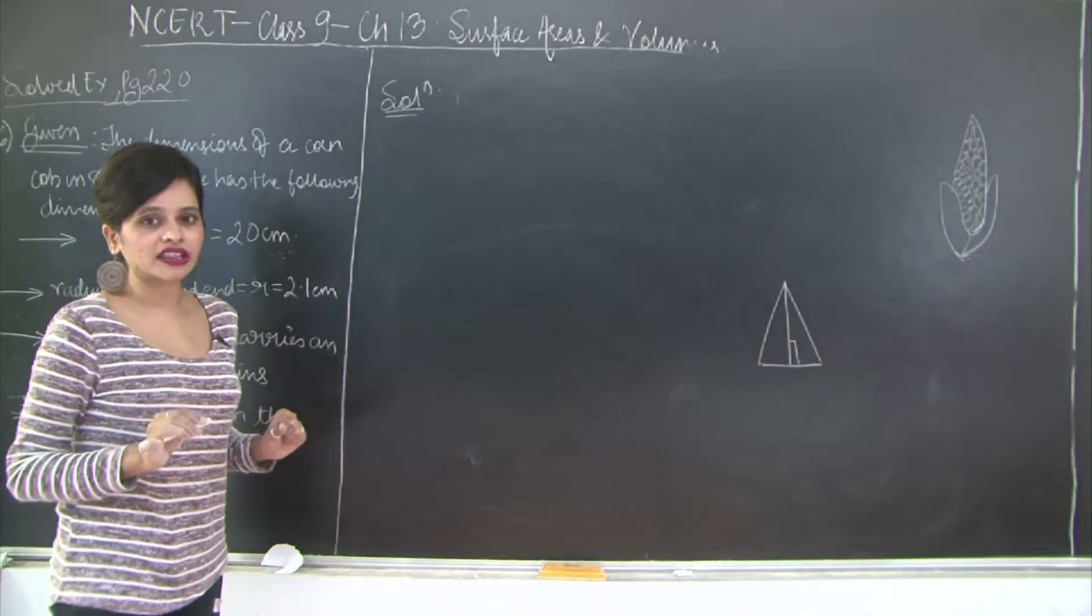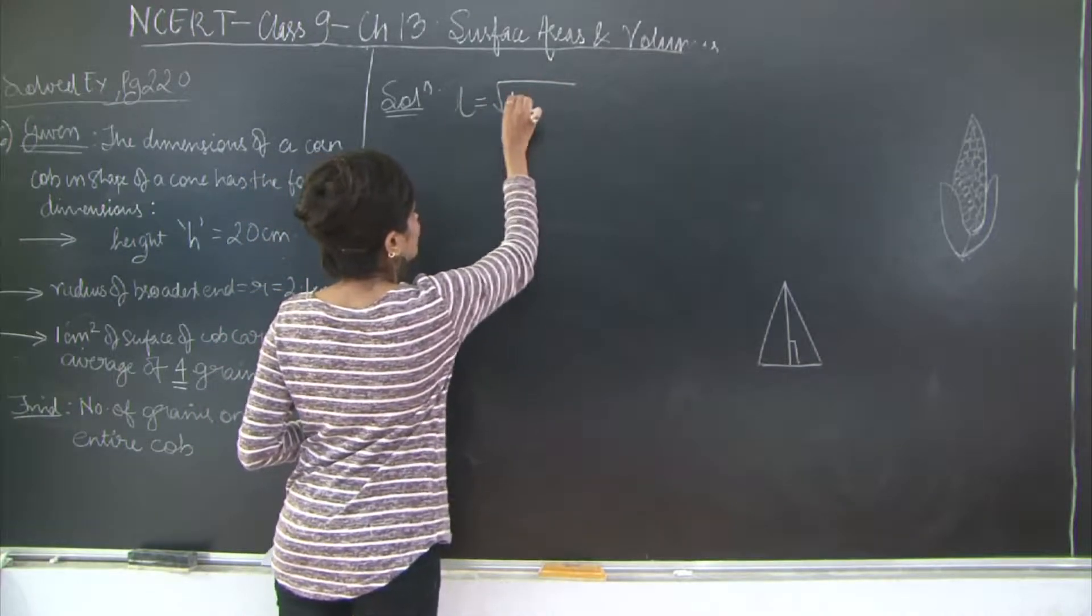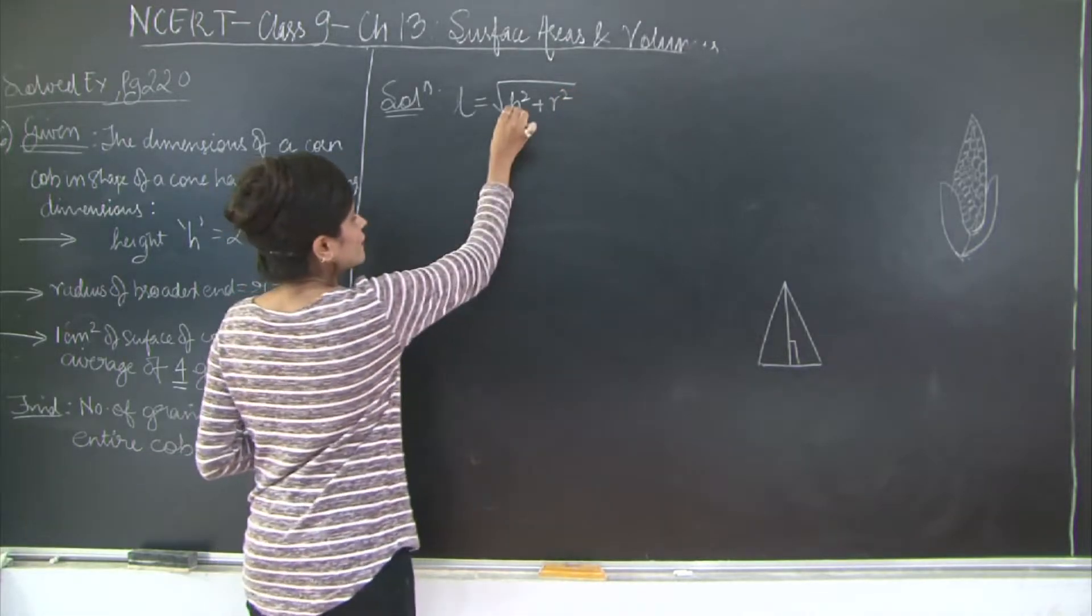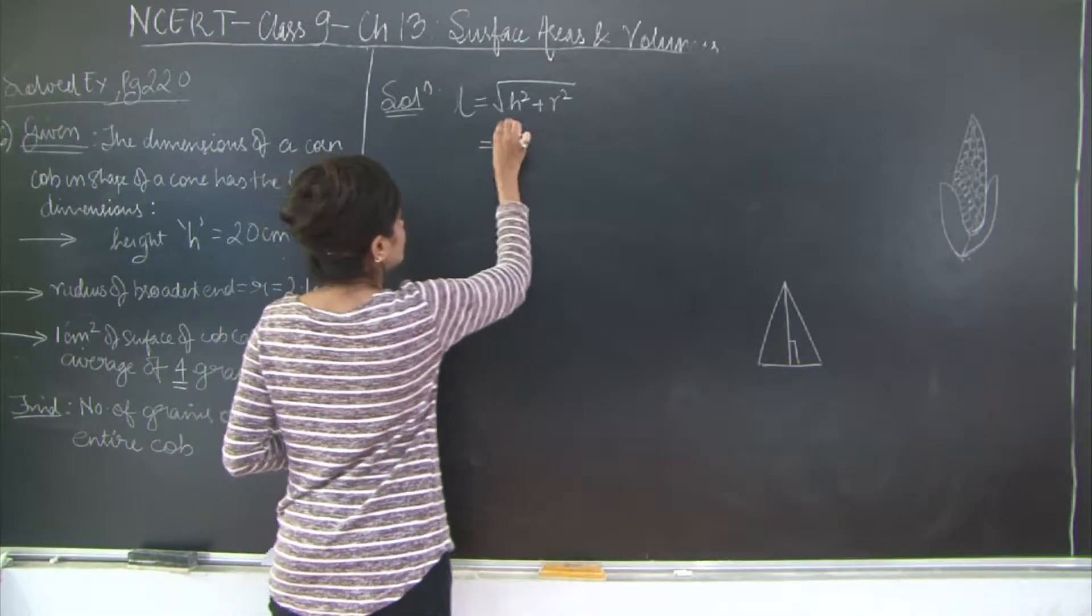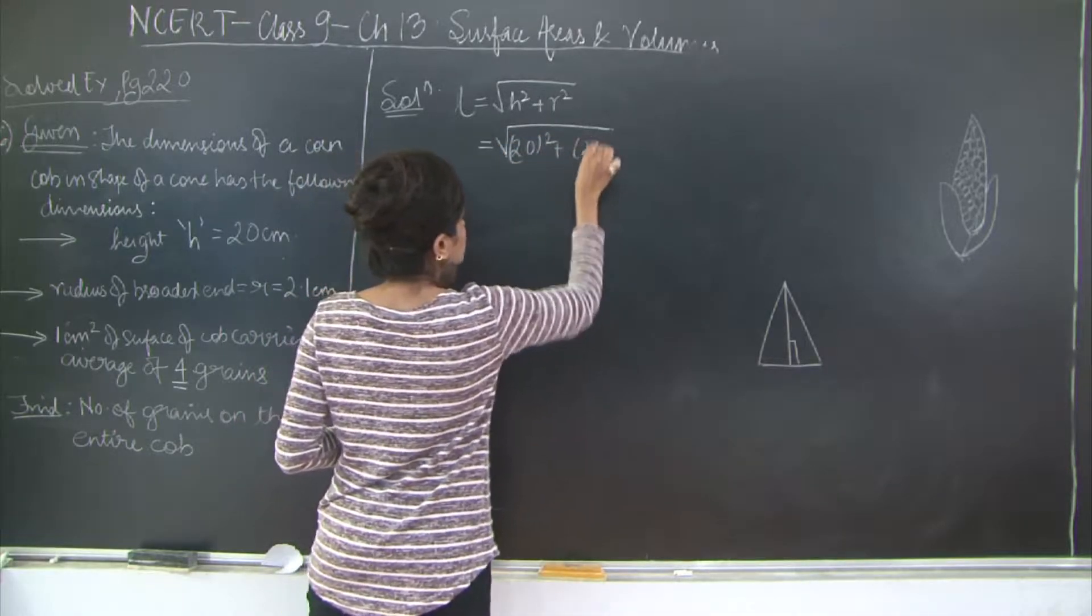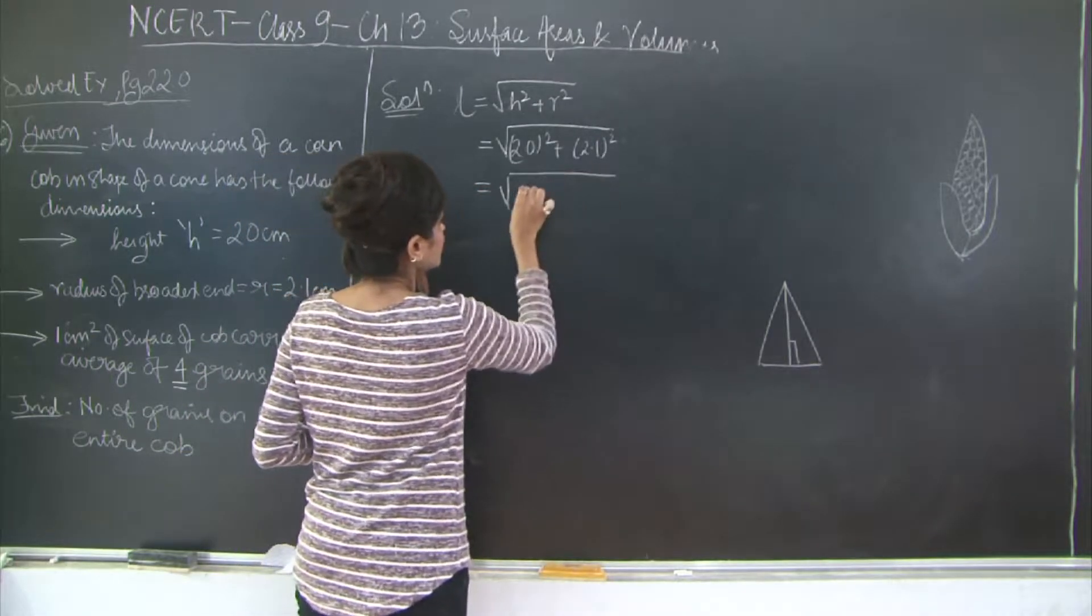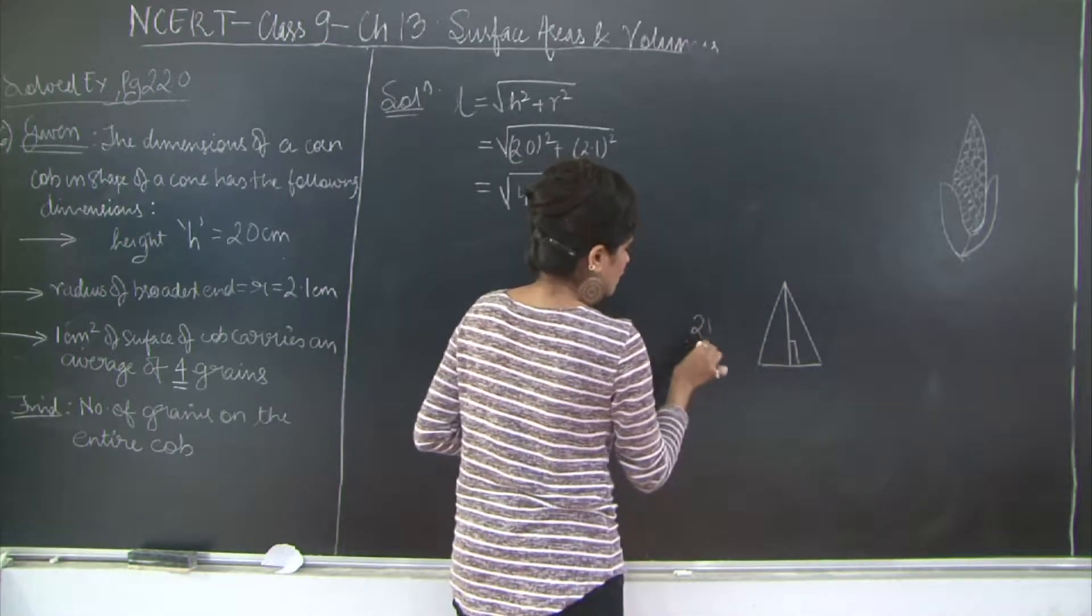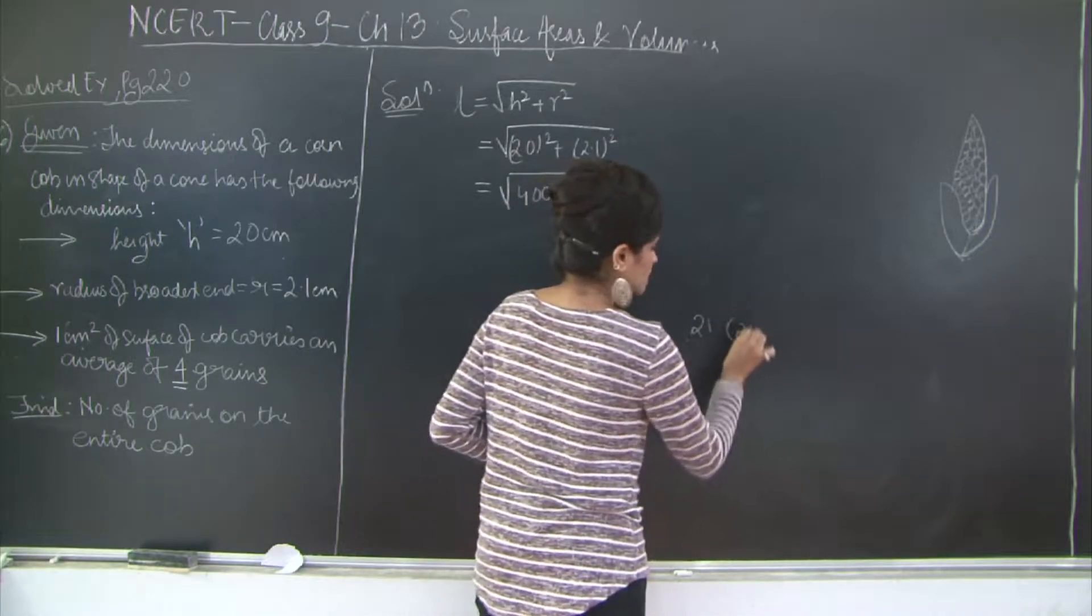First of all, we have been given the perpendicular height. Let's go ahead and find the slanting height using Pythagoras theorem, which we have learnt that L equals under root of h² plus r². Where h is the perpendicular height and r is the base radius. So this is going to be 20 squared plus 2.1 squared. 20 squared we know is 400. Let's just find 21 into 21.